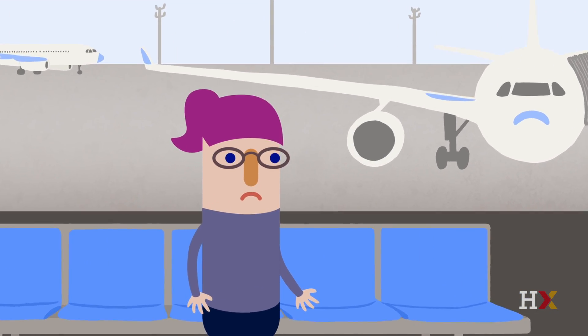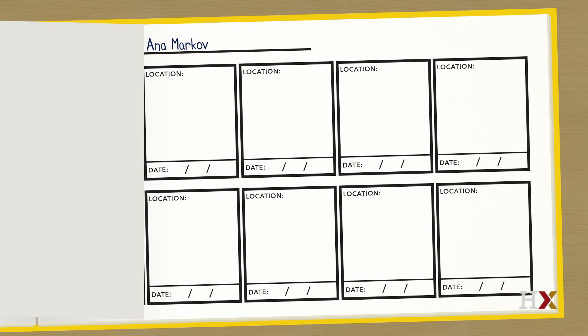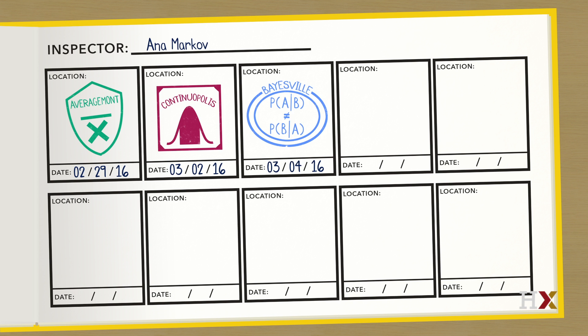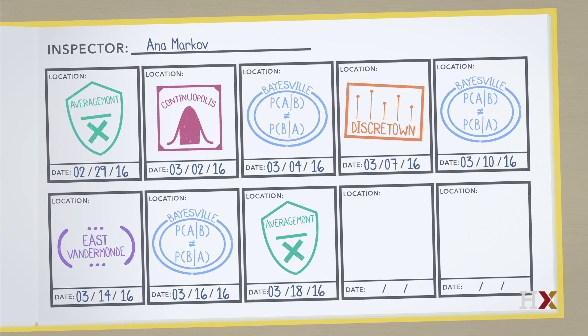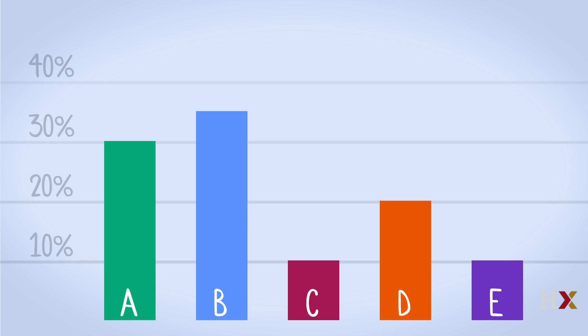To answer Anna's question, let's consider the following problem. In the long run, as Anna continues this random process, what percentage of her time will she spend in each city? Let's plot this after various numbers of trips. We have one bar for each city, and the height of each bar indicates the percentage of time Anna has spent in that city overall.